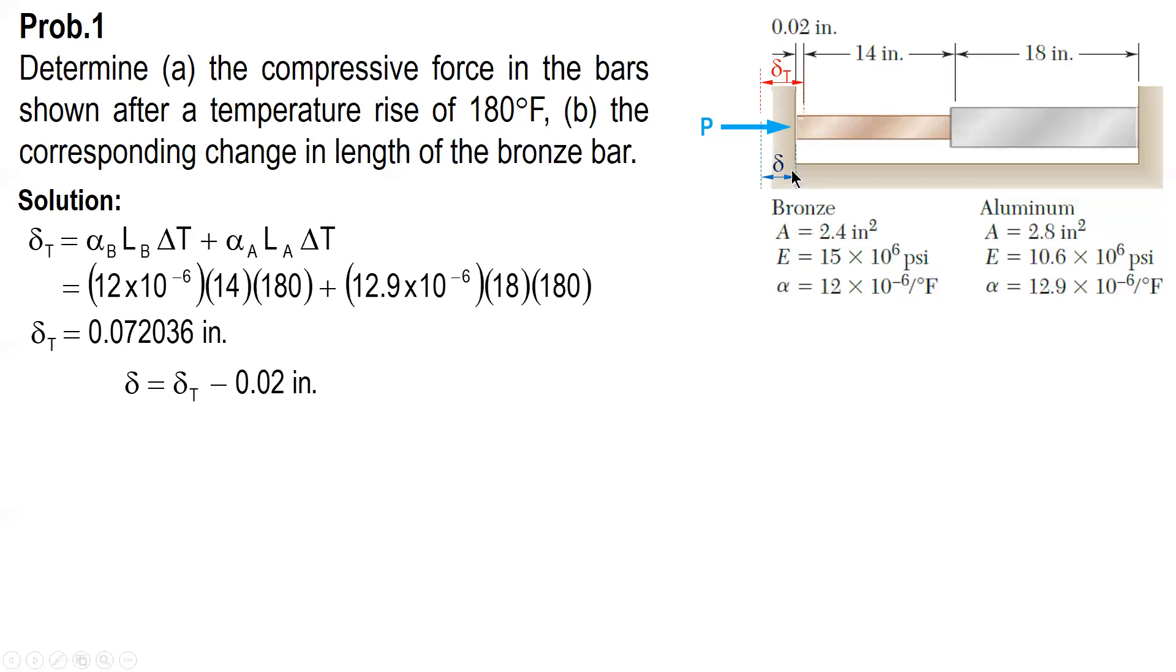But this value is equal to delta T minus 0.02. From the diagram, delta is delta T minus 0.02. If we substitute delta T here, delta is equal to 0.052036 inches. And the value of delta, again, is the total shortening of bronze and aluminum.